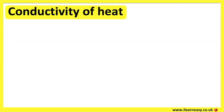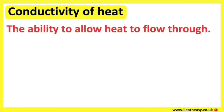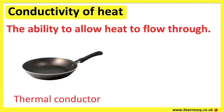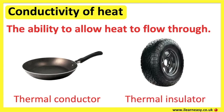Conductivity of heat is the ability to allow heat to flow through. Some materials allow heat to flow through and some don't. Thermal conductors allow heat to travel through them and are used when heat needs to be transported to another place — for example, metal saucepans are very good heat conductors. Thermal insulators don't allow heat to travel through them — for example, rubber. Thermal conductors and thermal insulators are also known as heat conductors or heat insulators.